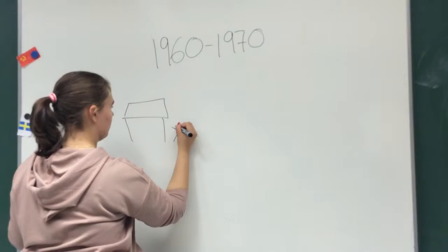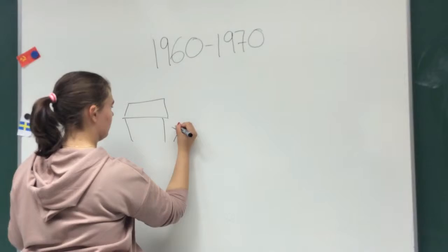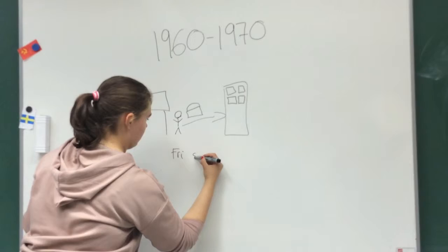1960s to 1970s most families moved from the countryside to the city for work. Weekends were free and the whole family spent fun time together. TVs became common and people started traveling.